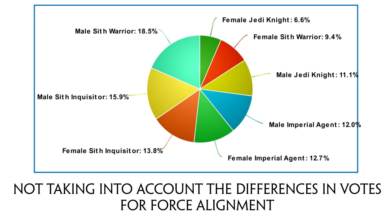The third chart, which should be on the screen right now, does not take Force alignment into account and instead focuses on class and gender. And immediately you can tell that things are quite different here — there are clear preferences for one over the other in different classes. Curiously, the Imperial Agent is the only one where the female gender received more votes than the male. On the other hand, I'm not surprised by the Jedi Knight vote being the one that leans towards male the most. For me personally, out of all the options in the poll, the female Light Side Jedi Knight was the least appealing, and your opinions seem to reflect mine in this regard.